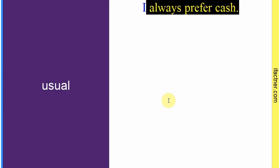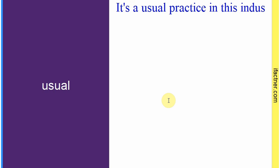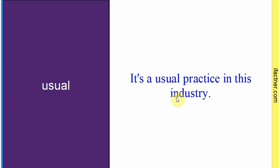Word hai: 'usual'. Sentence: 'It's a usual practice in this industry.' Yeh is industry mein ek aam si baat hai — log karte hain yeh. Toh 'usual' hota hai 'aam taur par', aam si baat jo jama taur par hoti ho. Sentence banaaya: 'It's a usual practice in this industry.'